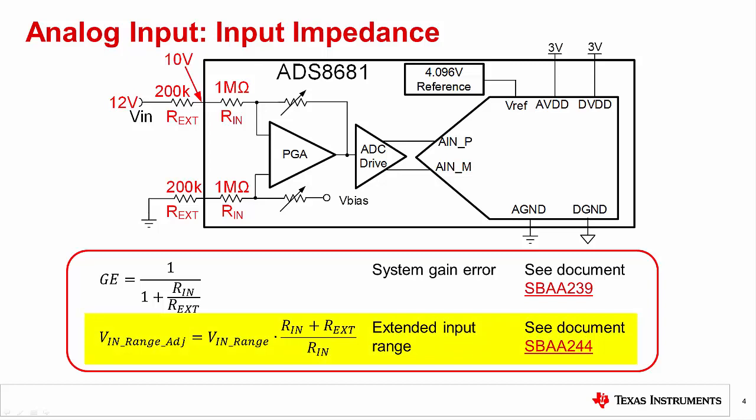If this resistance is known, it can be mathematically accounted for using the extended input range equation given. For example, if the specified ADC input range is 10 volts, connecting a 200 kiloohm external resistor will change the system input range to 12 volts. A detailed explanation of these effects is covered in the Analog Engineer Circuit Cookbook documents shown on the slide.